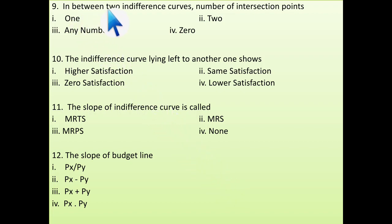Next is in between two indifference curve, number of intersection points are 1, 2, 0, any number. See, in properties what I have mentioned, two indifference curve are never intersecting. That means they are non-intersecting. As they are non-intersecting, so the intersection points will be 0.